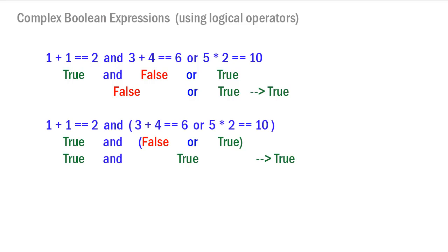We can change the order of evaluation using parentheses. Taking the same expression but adding parentheses around the last two parts, we still have true and (false or true), but the false or true is evaluated first. False or true is true, and then true and true is true.